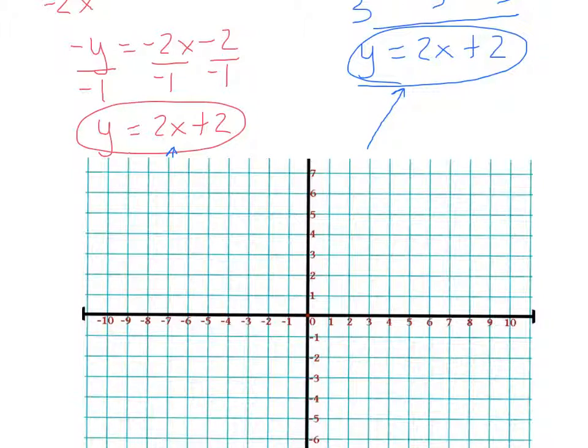Let's graph the red one first. My y intercept's 2, so I'm going to go up 2. And then my slope is 2 over 1, so I'm going to go up 2 and right 1. So my red line is this line right there.